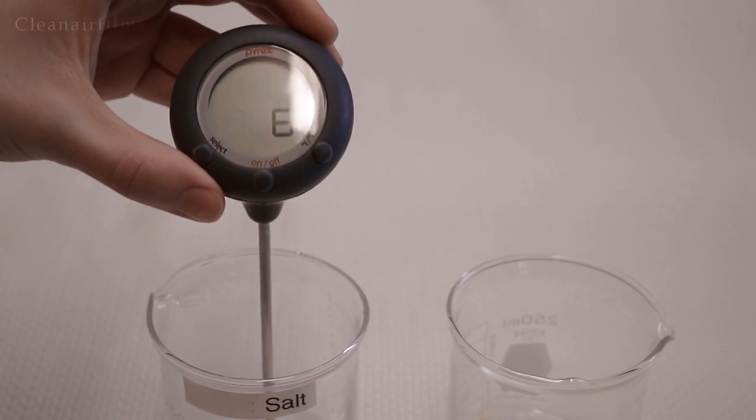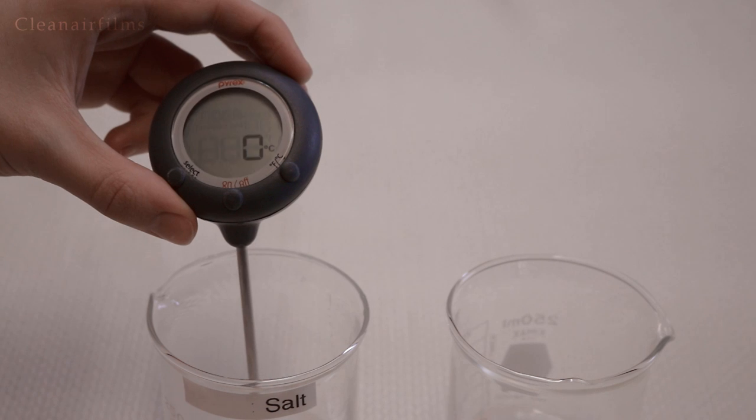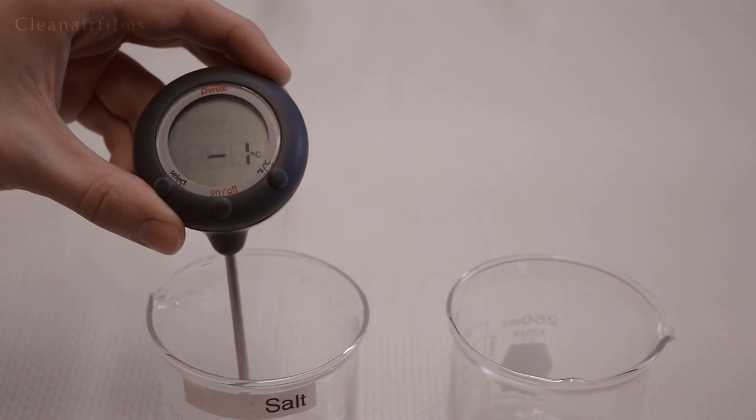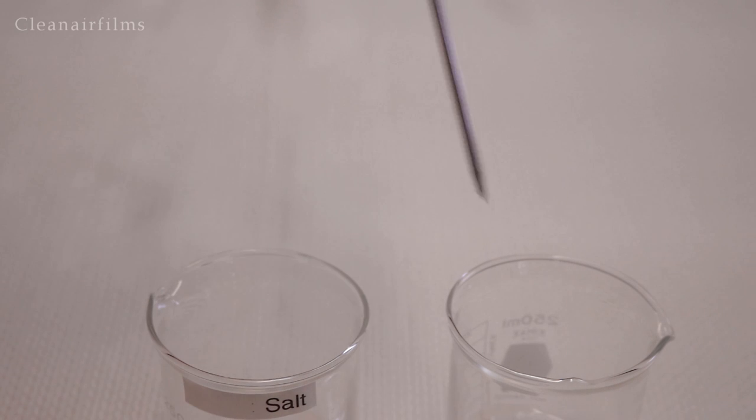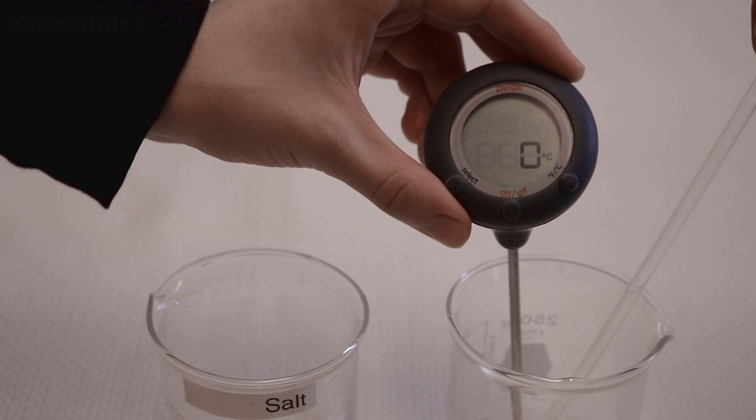Let's use the thermometer to measure each beaker's temperature. The salt water solution is measuring negative one degrees Celsius. The plain water is reading zero degrees Celsius. That is the freezing point.